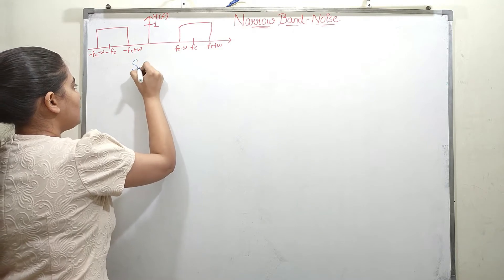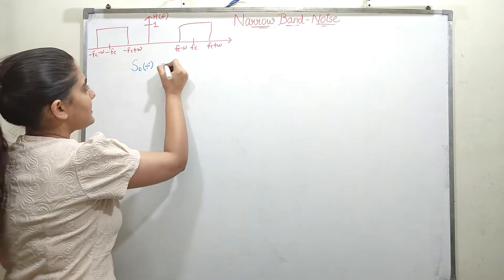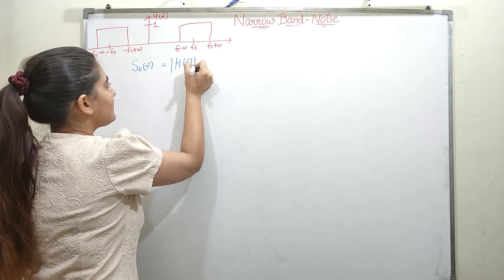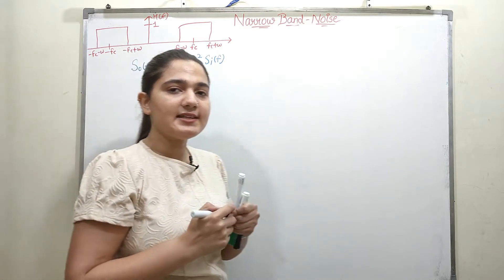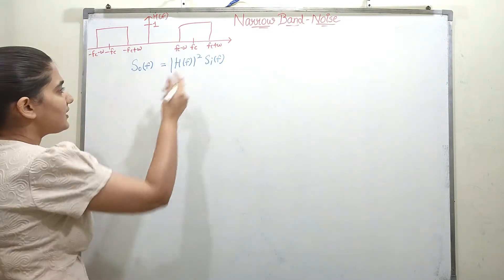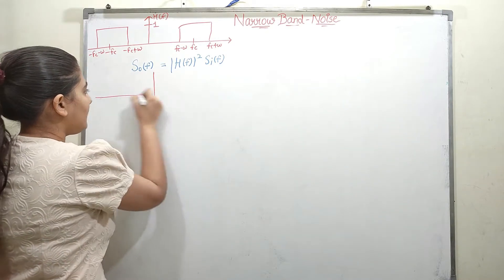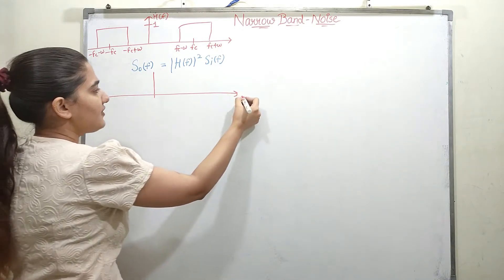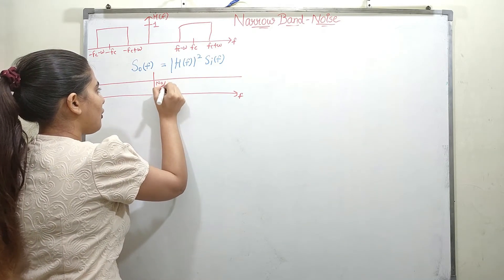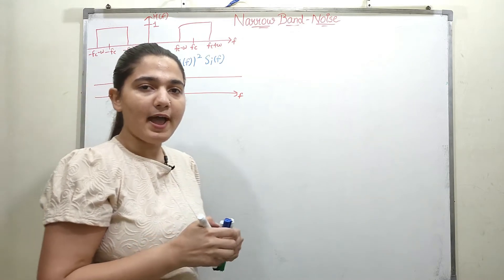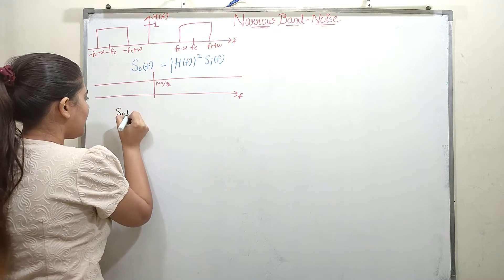Now, if I talk about the output power spectral density — I am representing it with S_out(F) — it is equal to |H(F)|² multiplied by S_input(F). This is the property of the power spectral density. The S_input(F) is the continuous noise of N₀/2 amplitude. When these two are multiplied, I will be getting S_output(F).